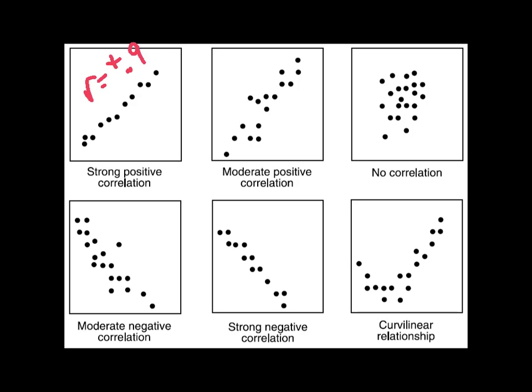The second one in the top middle, it's still positive, but it's not as strong. So the R value might be something like 0.5 or 0.6, somewhere in that neighborhood. It's still fairly strong. This one in the upper right has no correlation. Therefore, the R value is 0. It's completely random and chaotic.